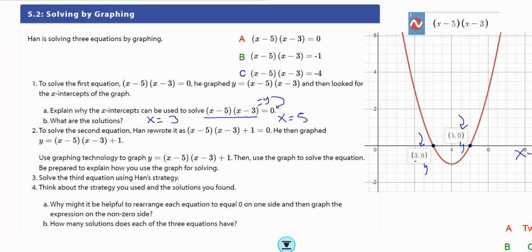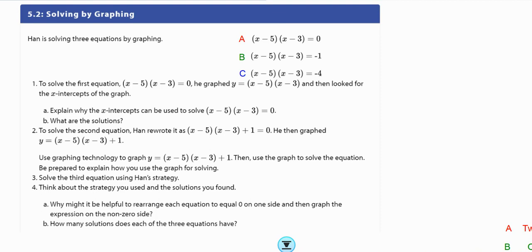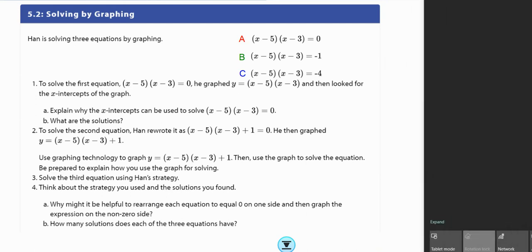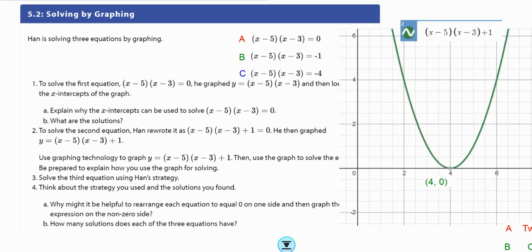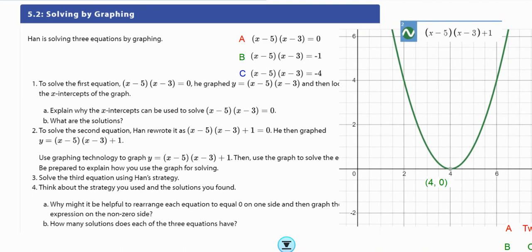Now we're going to look at the next one where it has this plus 1. So I'm going to clear what we have here and move this one out of the way. So now we're going to look at the second equation. I went and graphed it. My graph is in green. So here's the second graph. And to solve the second equation, Han wrote that, right? So it started out looking like this. It had the negative one on one side, but he changed it and he wrote it like that. So he moved that negative one to the other side and made it plus 1. He then graphed that.